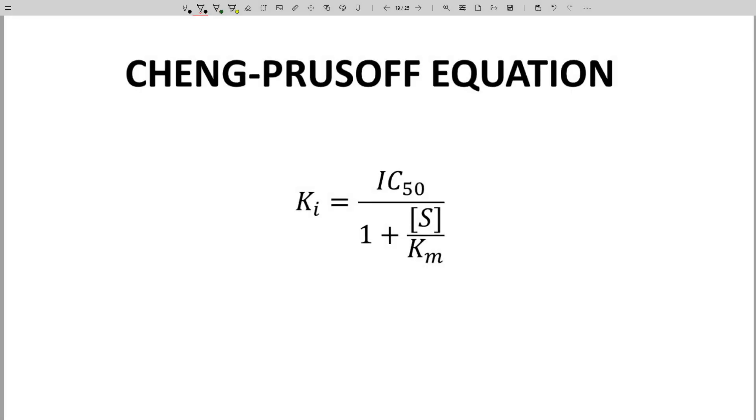On the screen is something called the Cheng-Prusoff equation. The Cheng-Prusoff equation allows one to convert an IC50 value to the Ki.